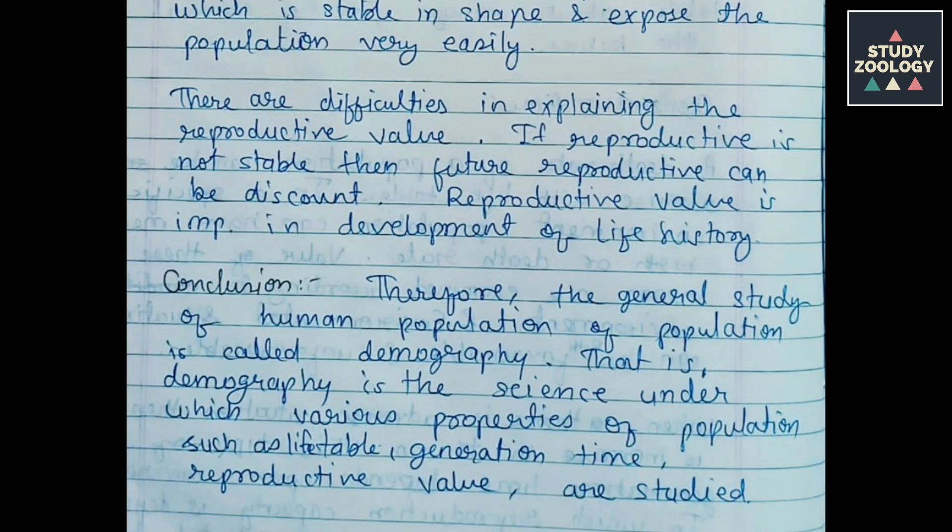Conclusion: The general study of human population is called demography. That is, demography is the science under which various properties of population such as life table, generation time, and reproductive values are studied.